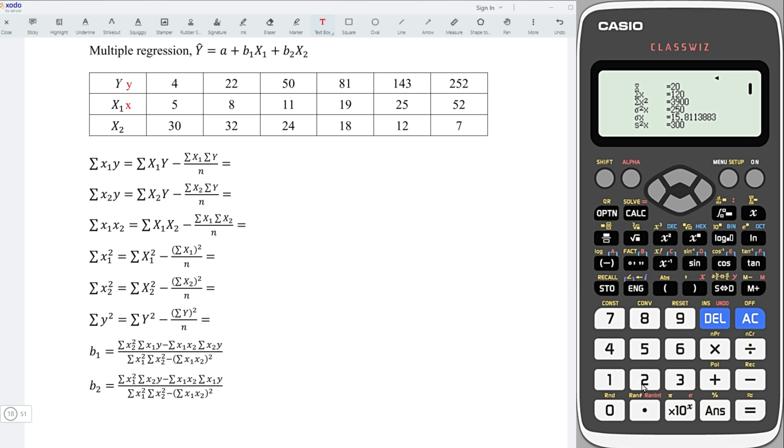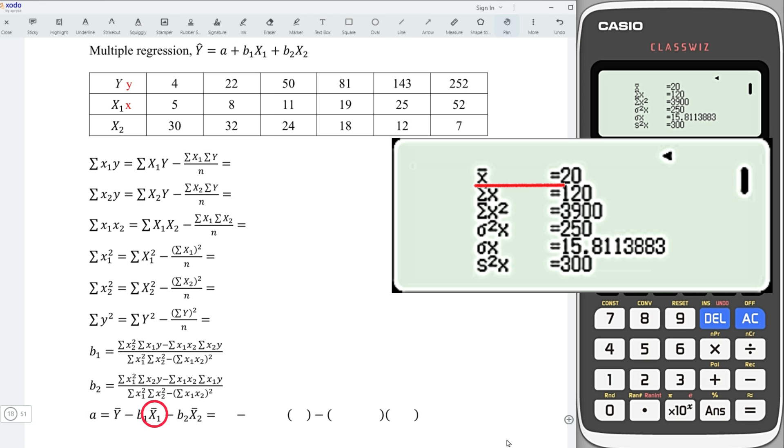Let's check the values that we need. Don't forget, we have to calculate the constant of the regression line, which means that we need the mean value of x. Besides, we need summation x, summation x-square.